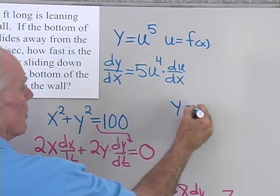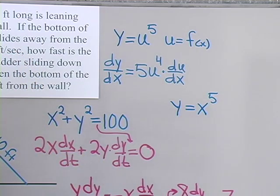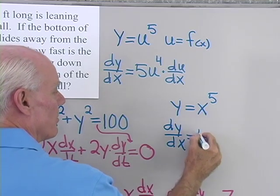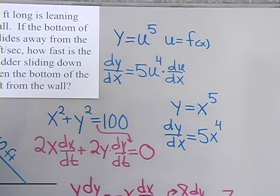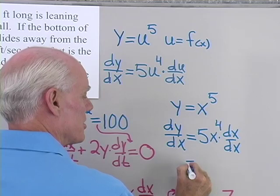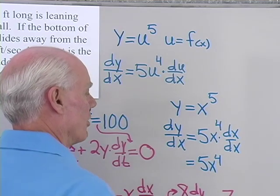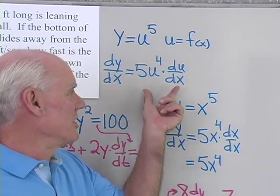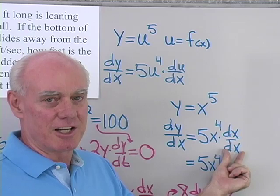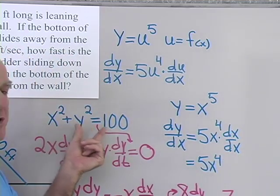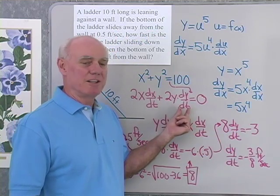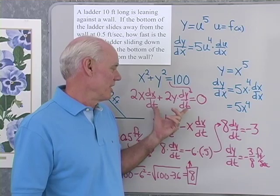Suppose y equals x to the fifth power and I differentiate with respect to x. dy/dx equals 5x to the fourth times dx/dx. Since dx/dx is 1, this just comes out to 5x to the fourth. So the chain rule is always there. It's just that when differentiating y with respect to x and the variable is x, you go right to that step without even seeing the dx/dx. But when I differentiate x squared plus y squared equals 100 with respect to t, I have to use the chain rule — because dx/dt and dy/dt are exactly those rates I'm looking for. If I wasn't using the chain rule, I'd never see these derivatives.